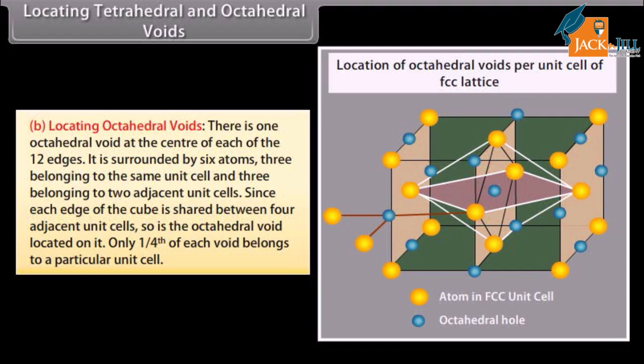There is one octahedral void at the center of each of the twelve edges of the cube. Each is surrounded by six atoms — three belonging to the same unit cell and three belonging to two adjacent unit cells. Since each edge of the cube is shared between four adjacent unit cells, only one-fourth of each octahedral void belongs to a particular unit cell.